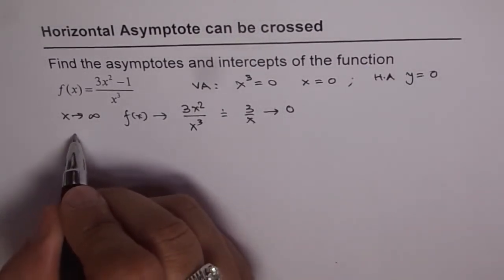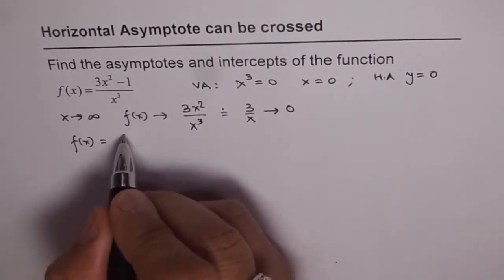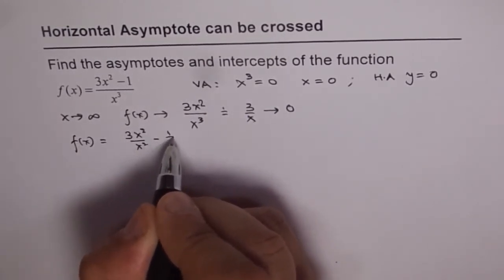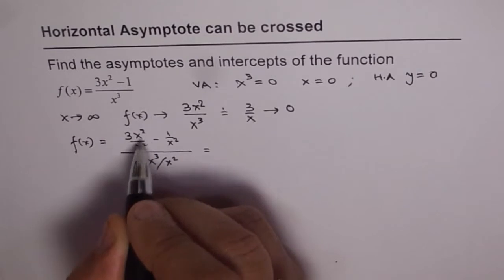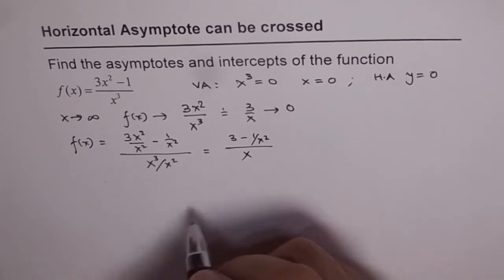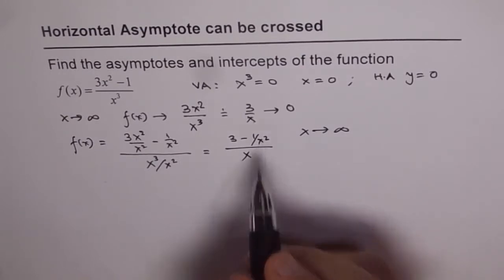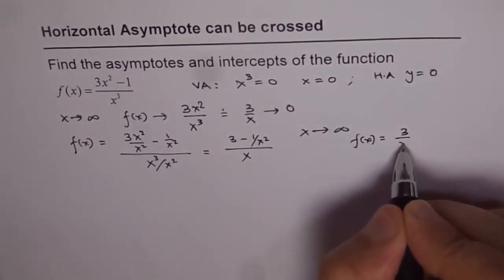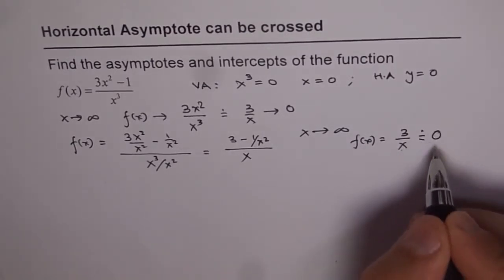Another way to do it: we can write f(x) by dividing both numerator and denominator by x². So we get (3x²/x² − 1/x²) over (x³/x²), which simplifies to (3 − 1/x²) / x. Now if x is very large, then 1/x² will be 0, so we can write f(x) ≈ 3/x. And since x is very large, 3 over a large number approaches 0.